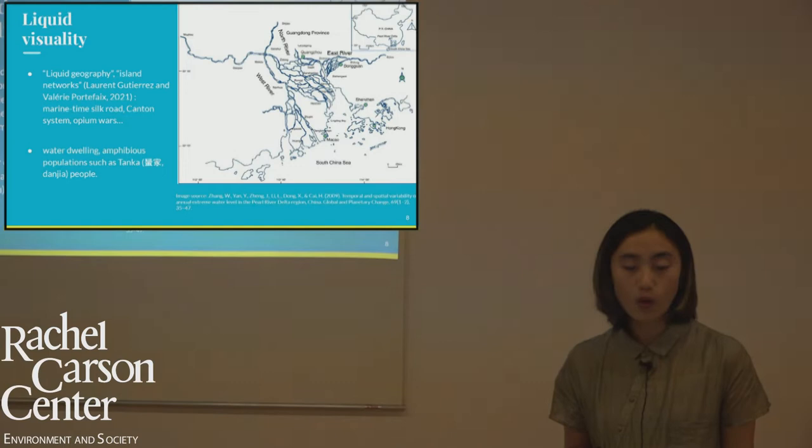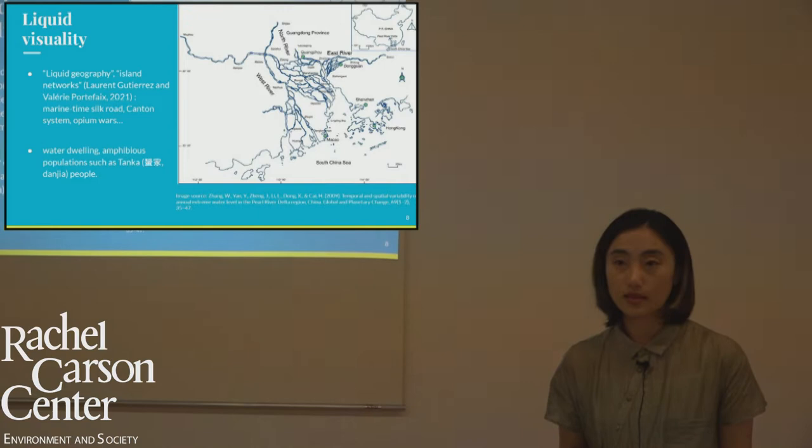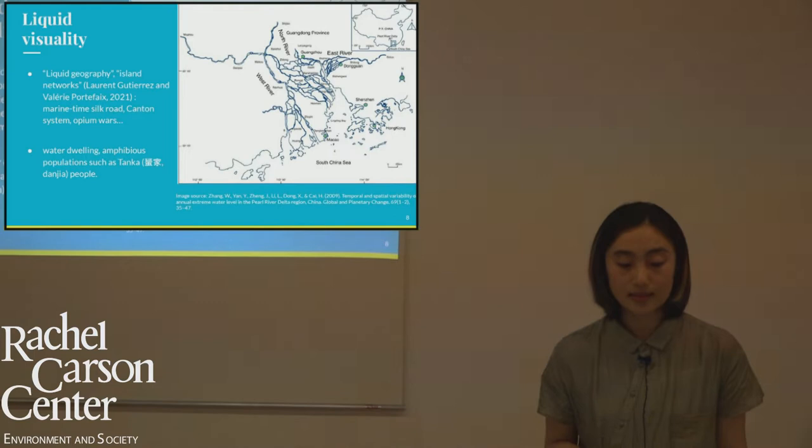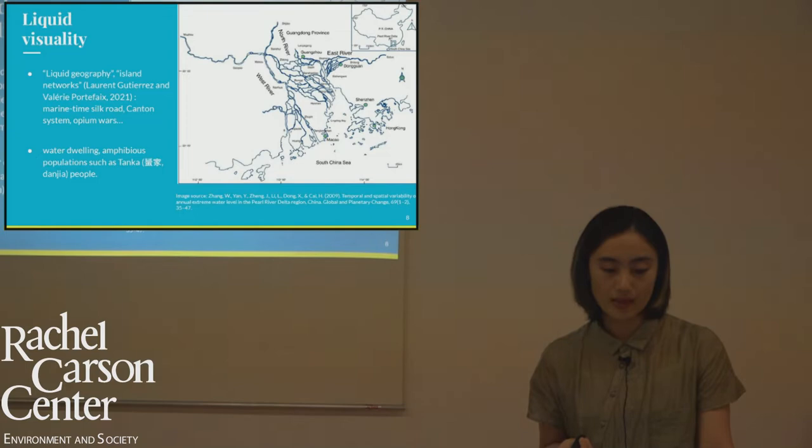The Delta is also home to historically water-dwelling amphibious communities such as the Tanka people, who developed distinct water-faring cultures with fishing, pearl diving, and water-centric cosmologies. Their ocean-nomadic trajectories marked historical suppression from central imperial Chinese states and European and Japanese colonial powers in the 19th and 20th centuries. We could say there is a strong liquid visuality in the mapping and imagination of this region.